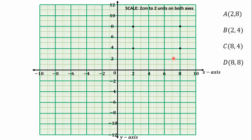We now join these four points to get the rectangle ABCD. We join A to B, B to C, C to D, and D to A. The question says we should indicate the vertices clearly, so we write the vertices against the plotted points. This is point A at (2, 8), point B at (2, 4), point C at (8, 4), and point D at (8, 8).